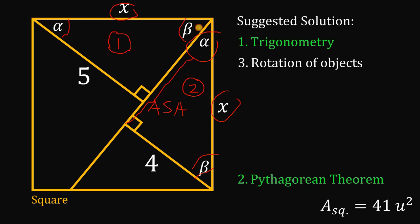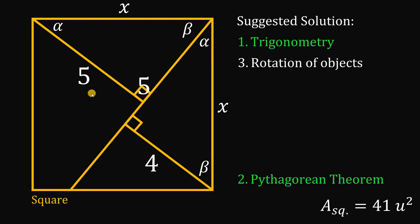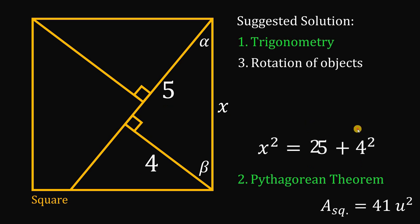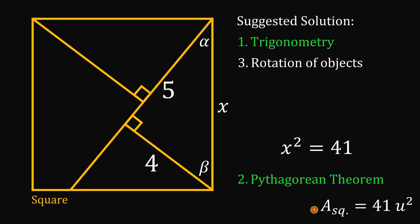Therefore, the longer leg of this right triangle must be equal to 5 units. Let's focus on this right triangle and apply the Pythagorean theorem. We have side lengths 4, 5, and x, so x squared equals 5 squared plus 4 squared. 5 squared is 25 and 4 squared is 16. 25 plus 16, again, we get a value of 41. So the area of the square is 41 square units.